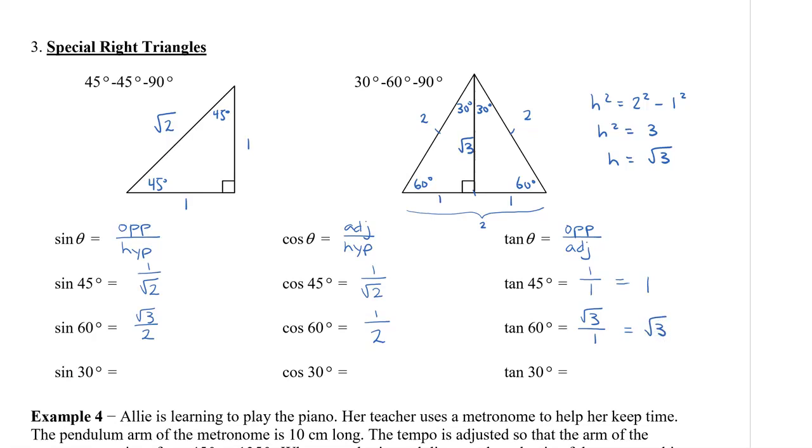And the last one is sine 30 degrees. We have 30 degrees from the top here. We have the opposite. Now, the opposite is way on the other side, which will be 1 divided by 2. Cosine 30 degrees, that's the adjacent side, which is now this altitude, the height, which is root 3 divided by 2. And tangent 30 degrees is our opposite, which is 1, divided by the adjacent side next to the angle, which is root 3.